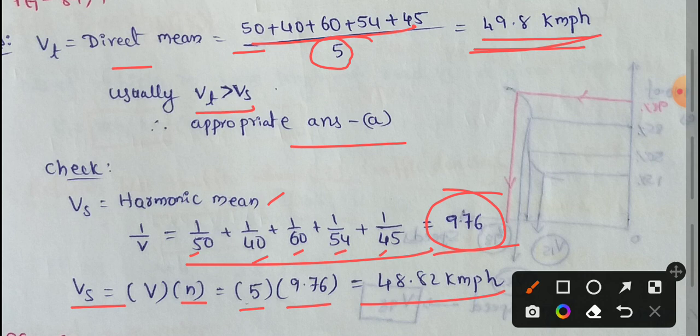This is space mean speed. Time mean speed is 49.8 km per hour, and space mean speed is 48.82 km per hour.